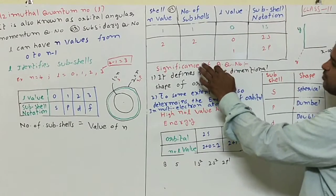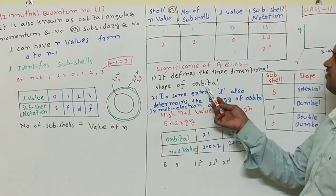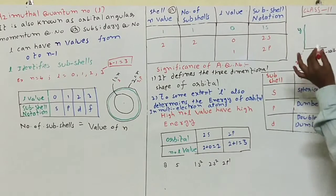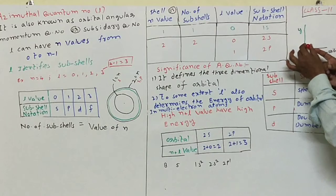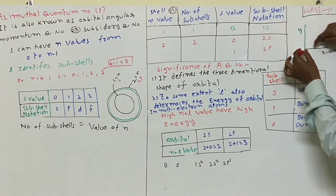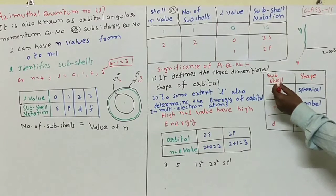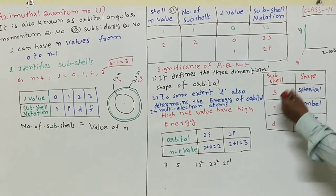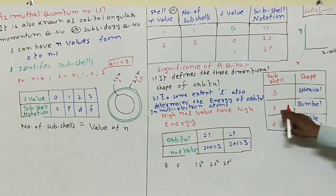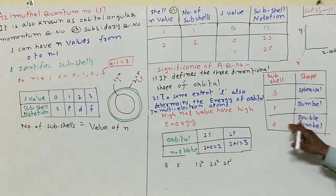Now we will see significance of azimuthal quantum number. It denotes the three-dimensional shape of orbital. See here, it is y-axis, it is x-axis. If I put this pen in this direction, it represents z-axis, and the shape of the orbital along these three axes is known as three-dimensional shape. S orbital has spherical shape, and P orbital or P subshell has dumbbell shape, and D orbital or D subshell has double-dumbbell shape.